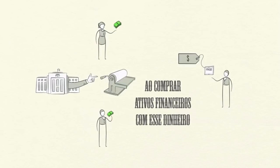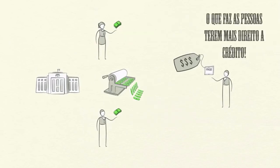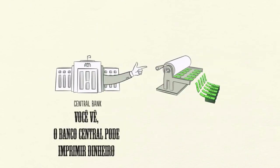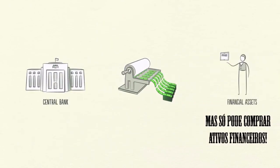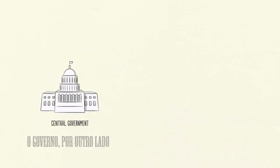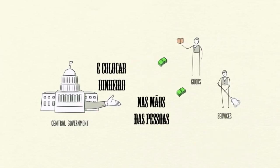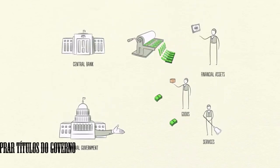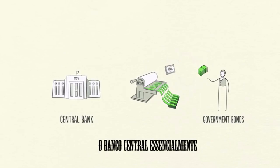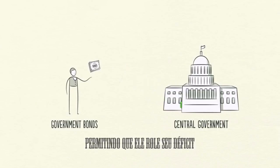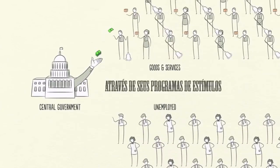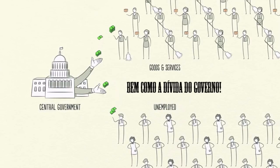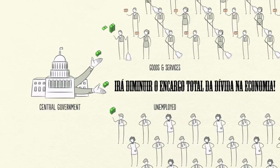By buying financial assets with this money, it helps drive up asset prices, which makes people more creditworthy. However, this only helps those who own financial assets. The central bank can print money, but it can only buy financial assets. The central government, on the other hand, can buy goods and services and put money in the hands of the people, but it can't print money. So in order to stimulate the economy, the two must cooperate. By buying government bonds, the central bank essentially lends money to the government, allowing it to run a deficit and increase spending on goods and services through stimulus programs and unemployment benefits. This increases people's income as well as the government's debt, but it will lower the economy's total debt burden.